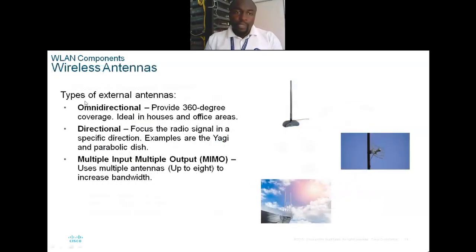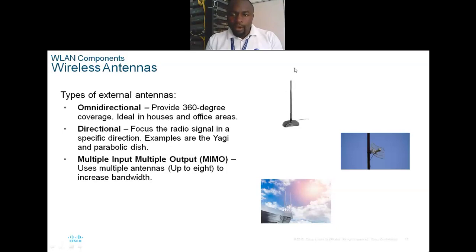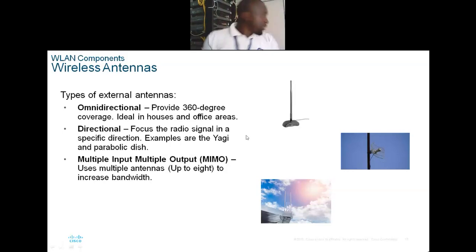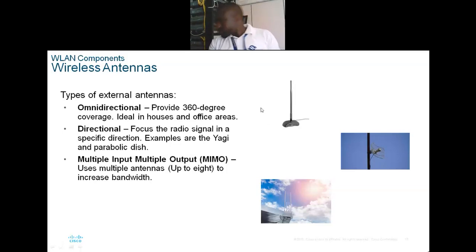We have two types of antennas: the omnidirectional antenna and the directional antenna. From the word 'omni,' it means it goes 360 degrees. Antennas like the typical rod antennas are omnidirectional. Directional antennas focus signals in a specific direction. Sectorial antennas are also a type of directional antenna.